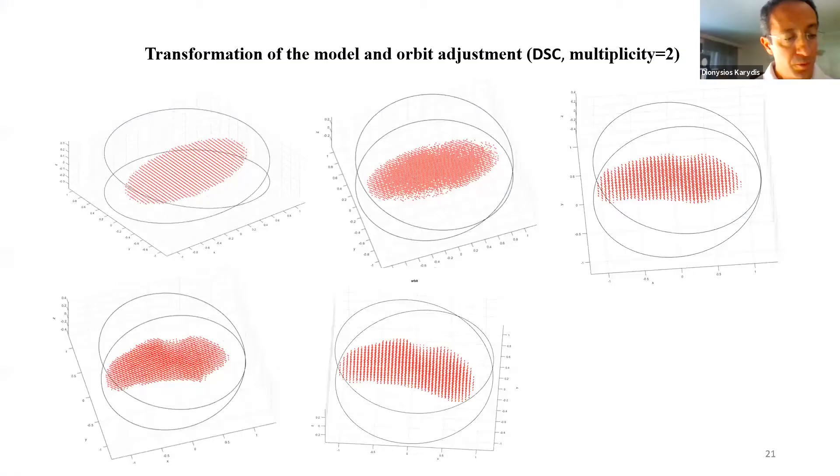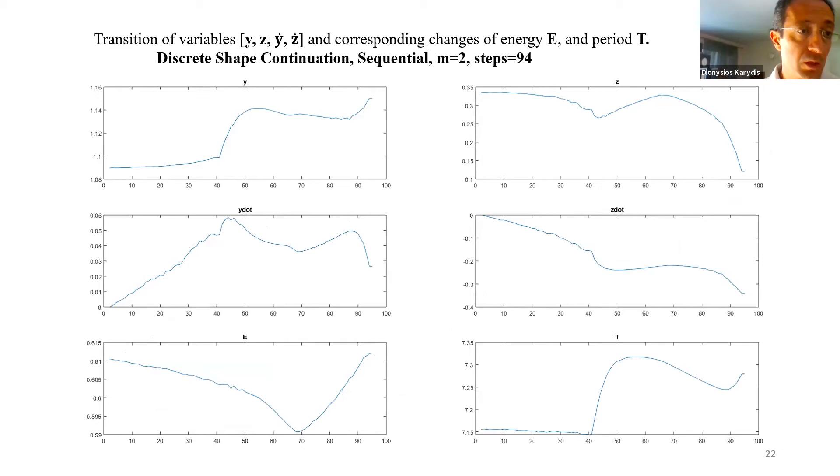In these figures, we can see five intermediate steps of the transformation of the model itself, and the according adjustment of the orbits while using the discrete shape continuation. In the six plots shown here, we see the visualization of the transition of the four variables, the change throughout the process, and the corresponding changes of energy and period. The shape continuation is done in a discrete and sequential way for an orbit of multiplicity 2, and in 94 steps.